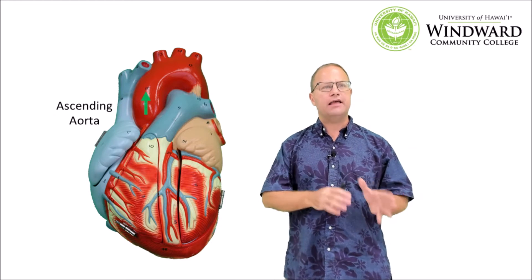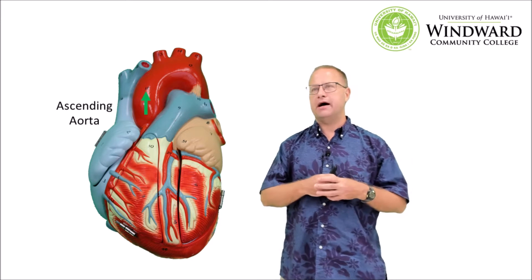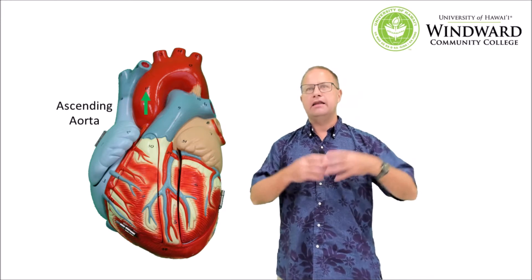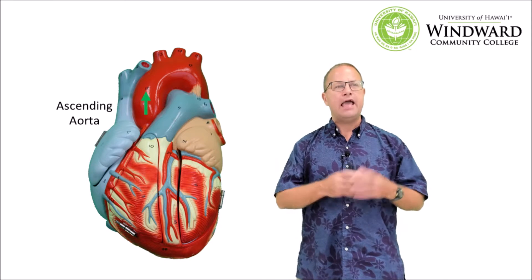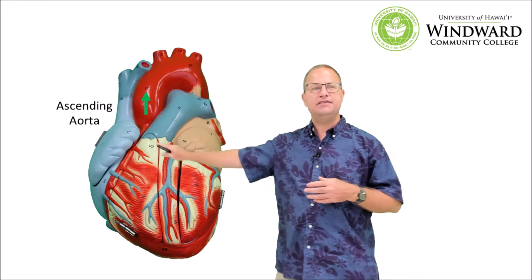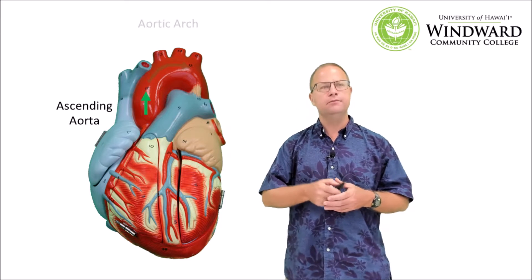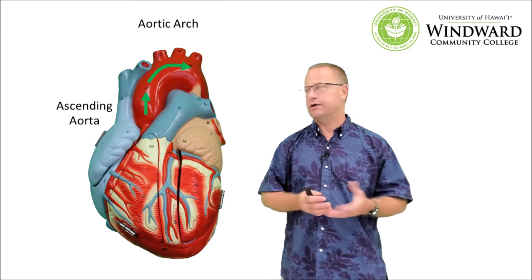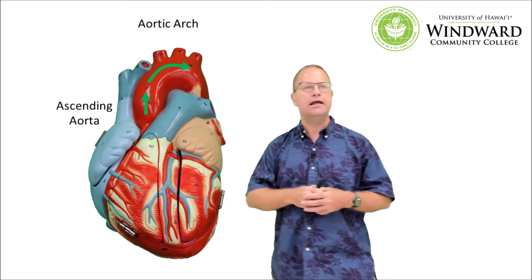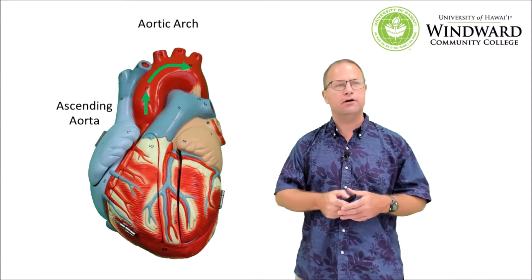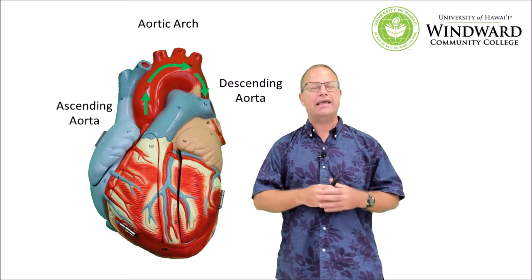Now let's take a look at the aorta. The aorta is the largest diameter artery in the body and has to withstand a lot of pressure because there's really high pressure blood in there. It has three parts: an ascending part arising from the left ventricle, an aortic arch which has a candy cane shape, and finally the descending aorta, which is more visible on the backside of the heart.